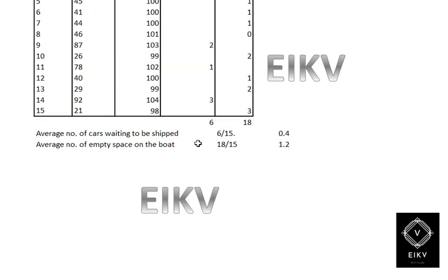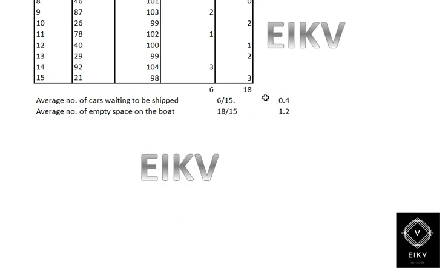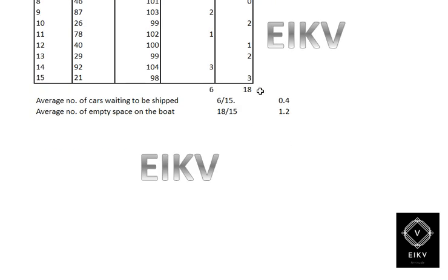After considering all 15 serial numbers, we get a total of 6 cars waiting to be shipped and 18 total empty spaces. Taking the averages: 6÷15 = 0.4 cars waiting on average, and 18÷15 = 1.2 empty spaces on average.